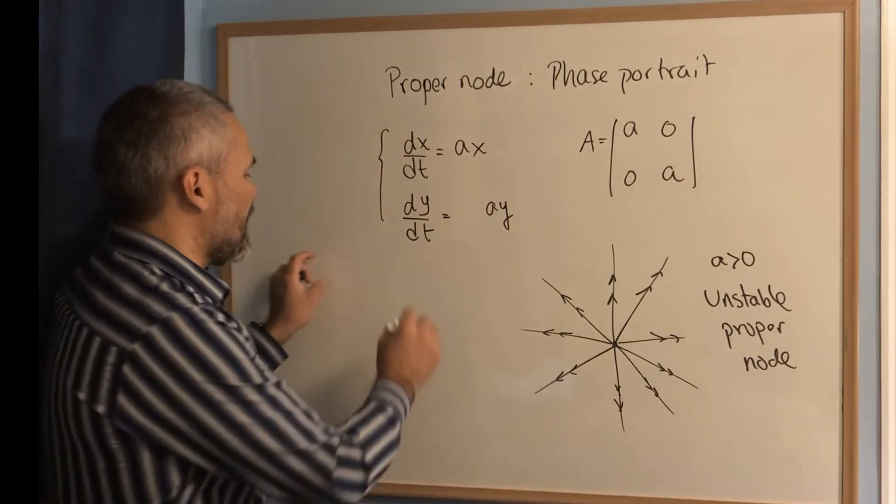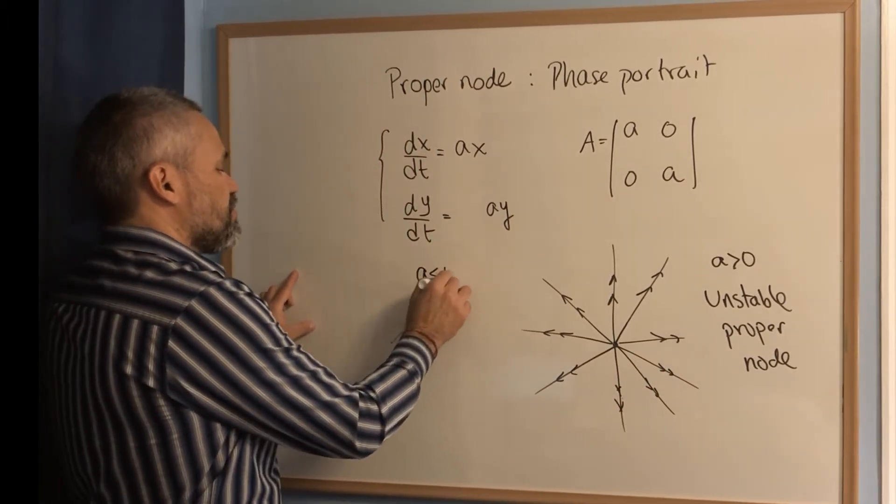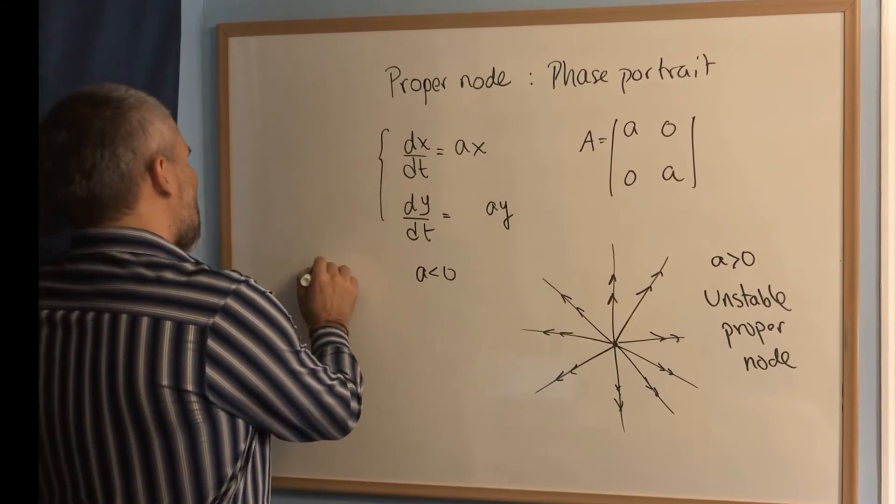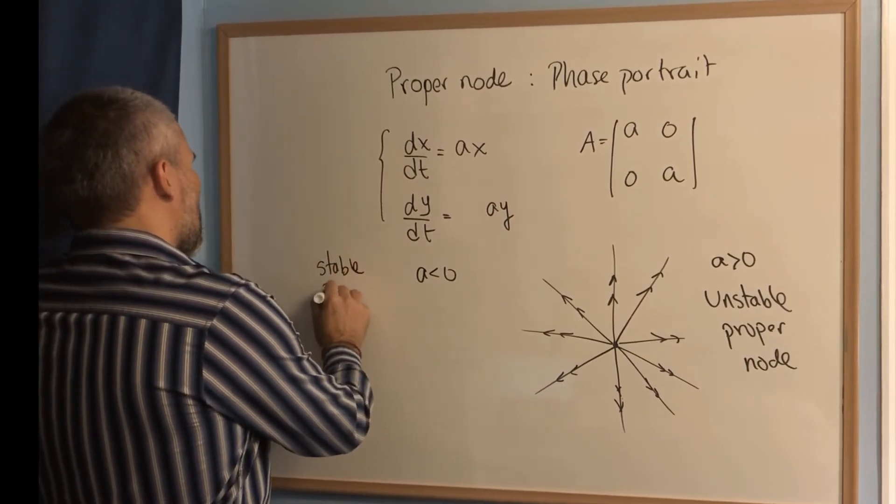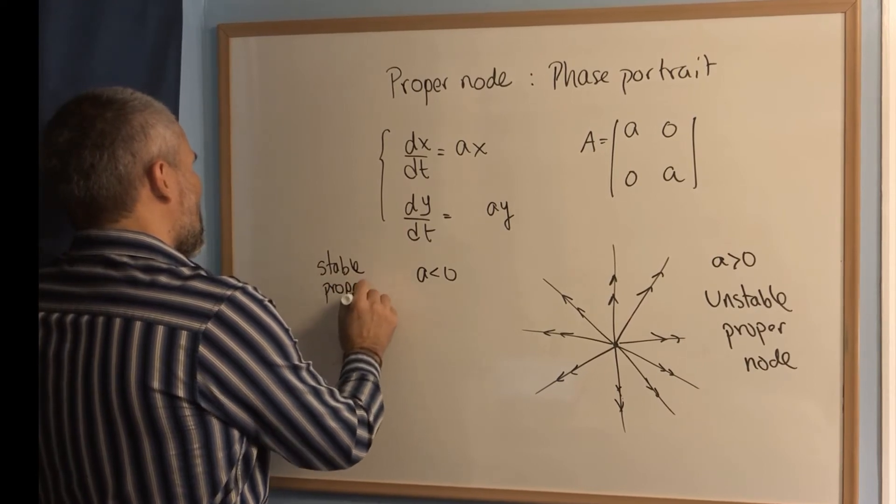And when a is smaller than zero, we have a stable proper node.